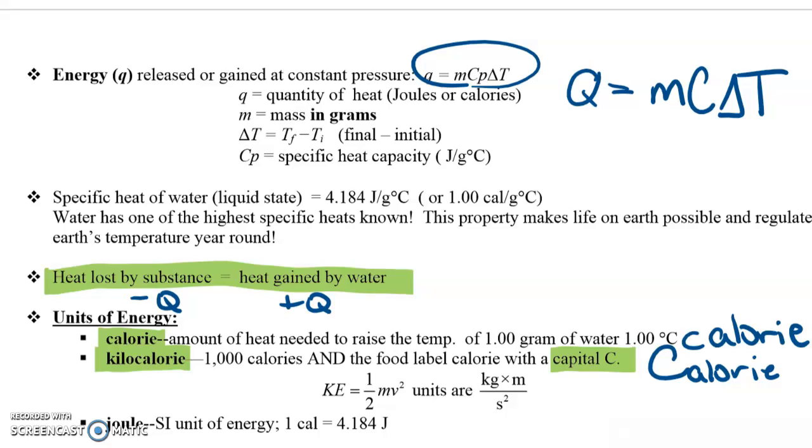I also wanted to point out the difference here between lowercase calories and capital C calories. So when you're looking at a food label and it's talking about the calories per serving, that's always written with a capital C because it's actually referring to a kilocalorie.